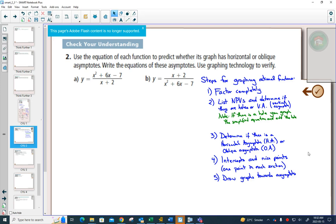Example 2. Just like example 1, we're going to follow the 5 steps. Even though the question is only asking us about horizontal oblique asymptotes and write the equations of these asymptotes, we are going to graph it completely.